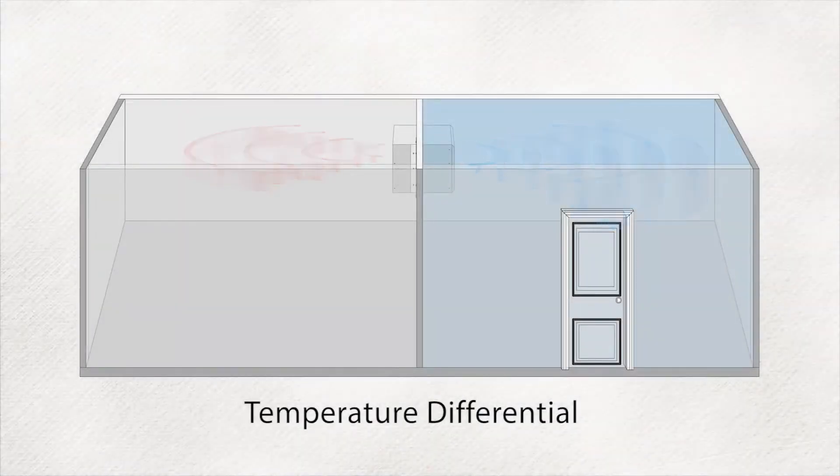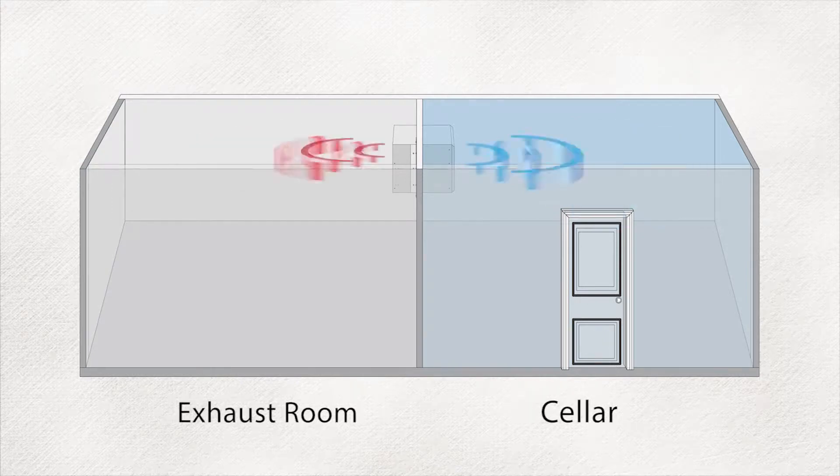Most cooling units are able to cool up to 30 degrees cooler than the temperature on the exhaust side of the cooling system. This difference is called the temperature differential.